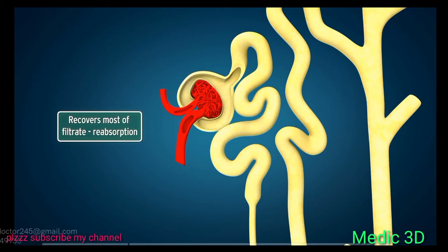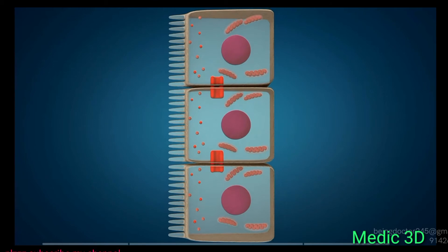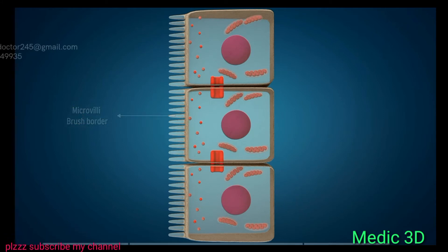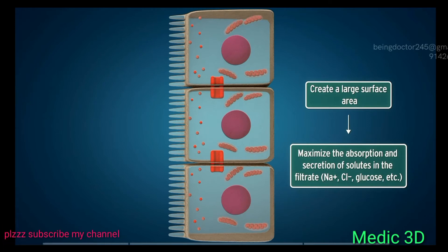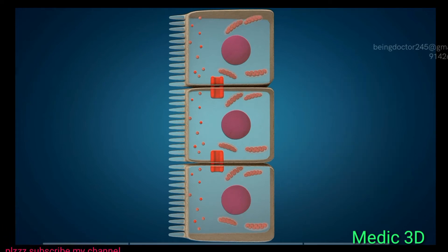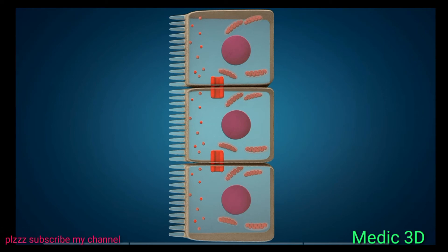The proximal tubule is about 15 mm long and 40 micrometers in diameter. It recovers most of the filtrate due to its considerable reabsorptive capacity. The proximal tubular epithelial cells have extensive folding of the apical membrane, and the apical membrane contains microvilli forming a brush border. These microvilli create a large surface area to maximize absorption and secretion of solutes like sodium, chloride, and glucose. These cells are rich in mitochondria, as 80% of reabsorption of filtered load by active transport takes place in the PCT.